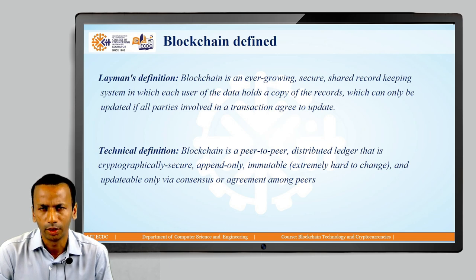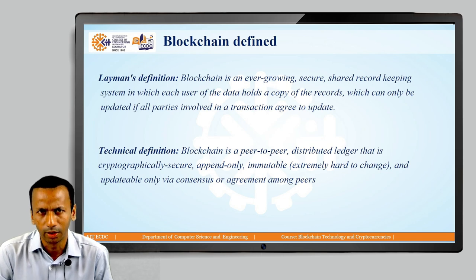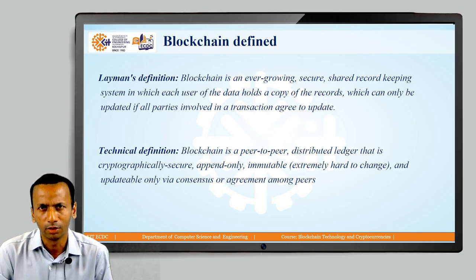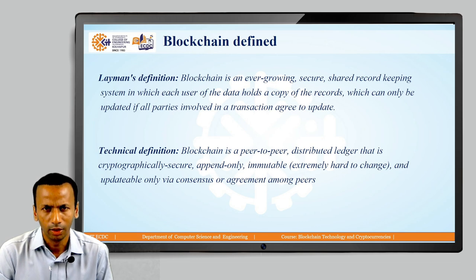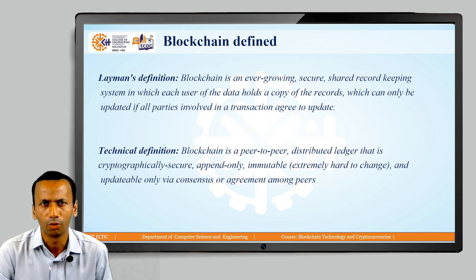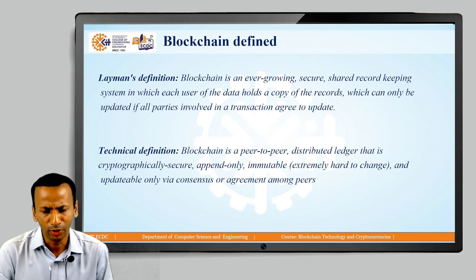Each user of the data holds a copy of the record, which can only be updated if all parties involved in a transaction agree to update it. In other words, blockchain is a distributed ledger where we can store data — here we call this data a transaction. The distributed ledger is called a blockchain.